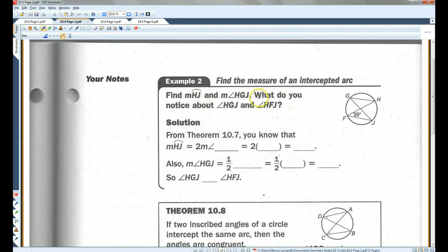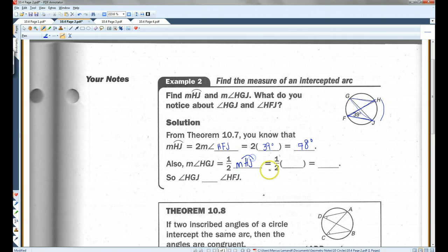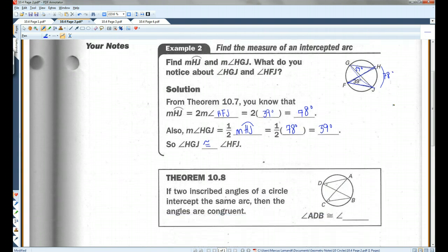Find the measure of arc HJ and the measure of angle HGJ. What do you notice about these two angles? So from Theorem 10.7, you know that arc HJ, that's this arc here, is going to be twice the measure of this angle HFJ. HFJ is 39 degrees. 2 times 39 degrees is 78. Also, the measure of angle HGJ, that's this angle, equals half this arc. So it's one half 78 degrees, which is 39 degrees. So, these angles are congruent, which makes sense because they open up into the same arc.